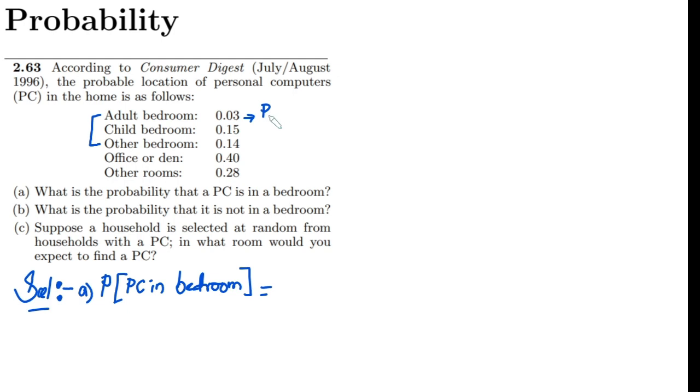Let me call this one as the probability of the availability of PC in adult bedroom. This is in child bedroom, and this is in other bedroom. These are for the bedroom and here we have these probabilities.